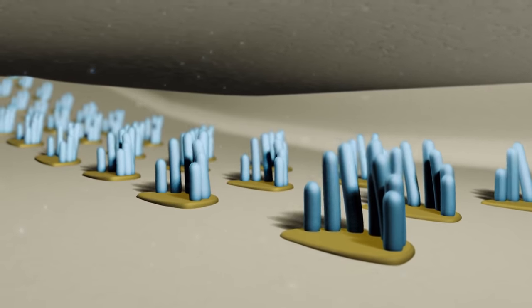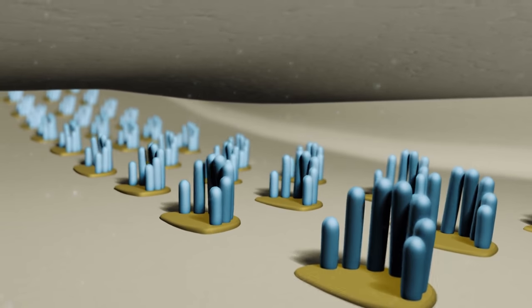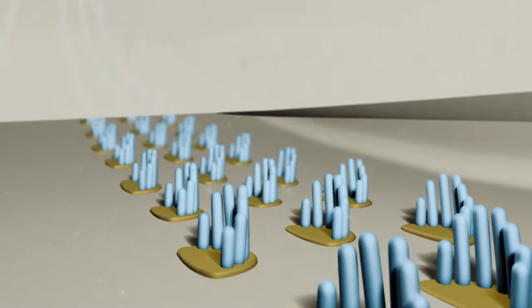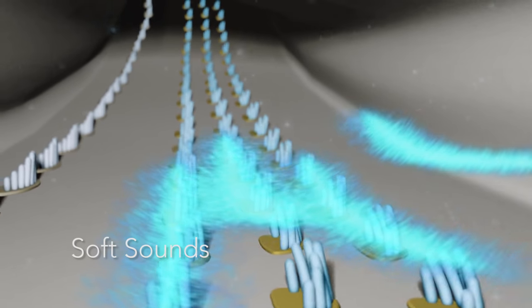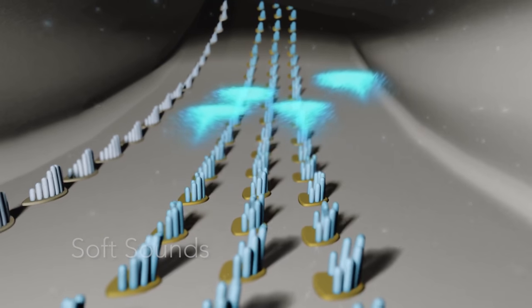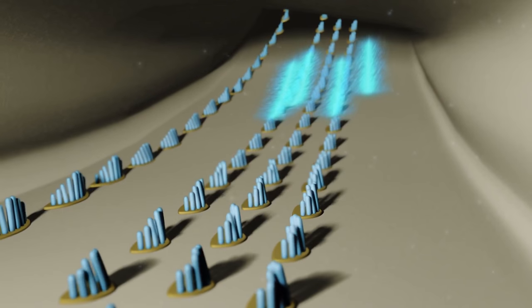There are fine hair cells responsible for sound transmission. The three rows of outer hair cells react to soft sounds and sharpen the differences between similar sound frequencies. The inner hair cells react to loud sounds.